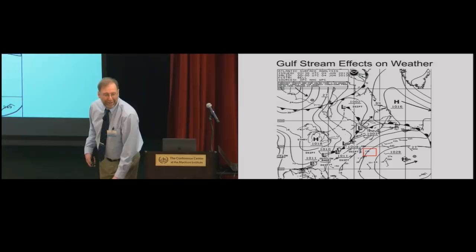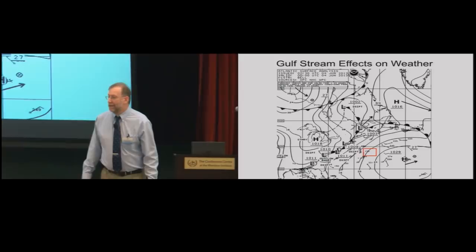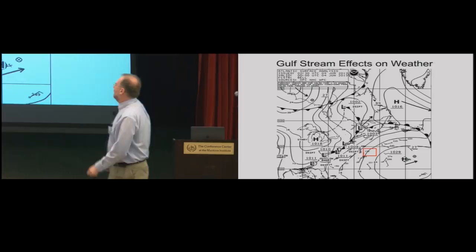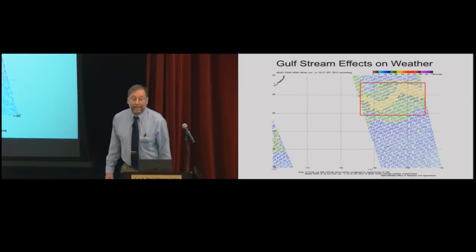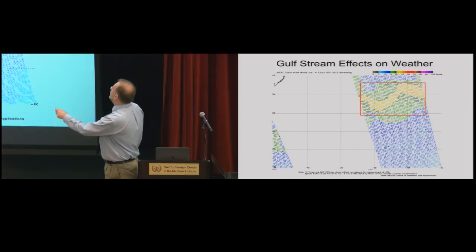A quick preview of Frank's upcoming talk on the Gulf Stream: a surface analysis chart showed a fairly benign situation in a small area — not many isobars, on the periphery of a high — but ASCAT satellite wind imagery of that same area revealed the very clear structure of the Gulf Stream. A reminder that features not visible on the isobar chart can still be meteorologically significant.